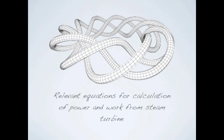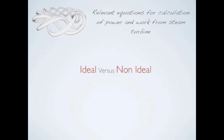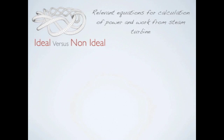So now, we are going to look at the relevant equations to calculate work done and power of a steam turbine. These equations are divided into ideal and non-ideal. Ideal equations are ones that deal with 100% steam turbine efficiency. On the other hand, non-ideal equations deal with a certain percentage of efficiency.